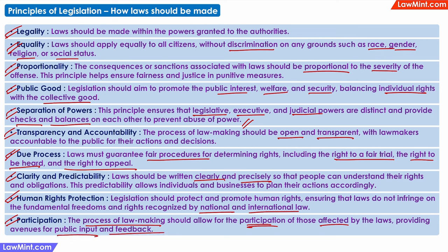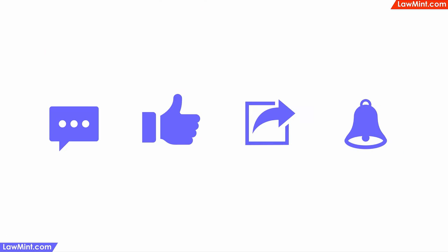You will see that all of these principles are common sense. And many of these principles such as legality, equality, separation of powers, due process, and human rights protection are built into the supreme rule book of the country itself — that is, they are built into the constitution. With that we will end this video. If you have any questions or feedback, post a comment below and I will see you soon in the next video. Take care and Jai Hind.